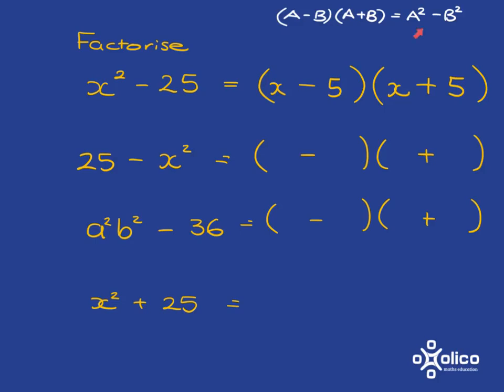So as soon as you recognise that you've got a difference of two squares, you know when you factorise it you're going to get two brackets, one with a minus, one with a plus, and now you've just got to figure out what these are. We know that what goes here must be the same thing multiplied together to give you 25.